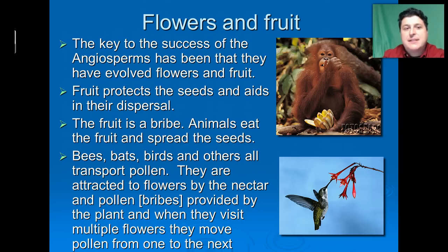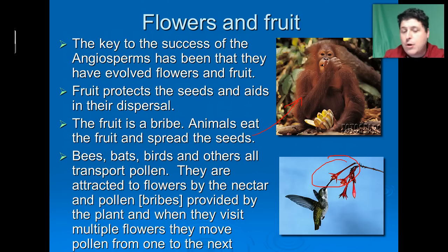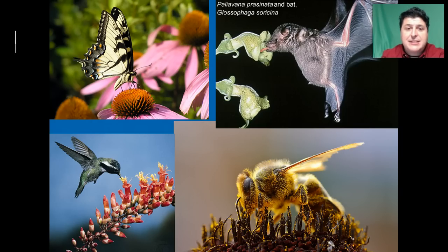The key to the success of angiosperms is that flower and fruit. The fruit protects the seeds and helps with their dispersal — it can act as a bribe so that animals eat the fruit and spread the seeds. Bees, bats, and birds can help with pollination across great distances, attracted to the flowers by nectar and transferring pollen from one flower to the next. Plants have met with great success as a result of evolution by natural selection, giving us a great diversity of plants today. Without those plants providing photosynthesis, we would not have the food and oxygen that allow us to survive.